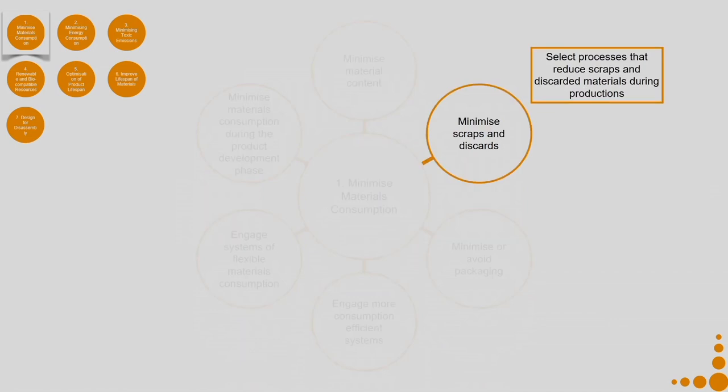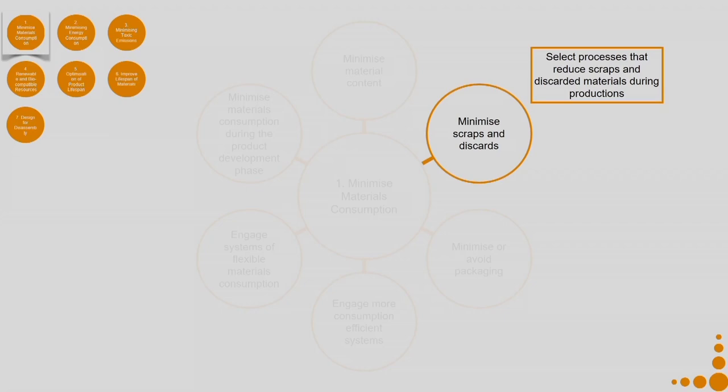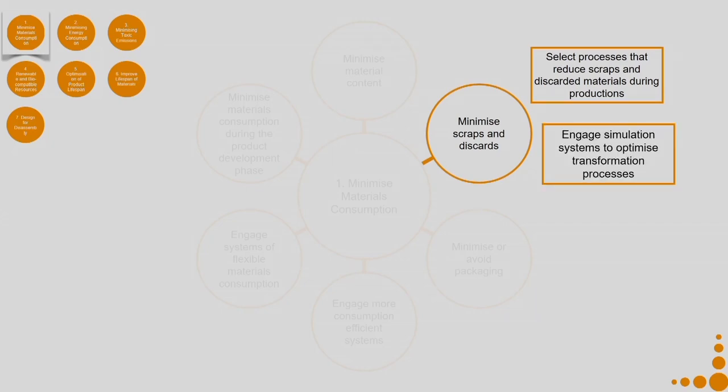Coming to minimize scraps and discards — select processes that reduce scrap and discarded materials during production. You can manufacture a product using two different manufacturing processes; one may generate more scraps and the other less. Go for the process that generates less scrap. Also engage simulation systems to optimize transformation processes — when we use simulation, we can optimize on scraps and discards produced significantly.